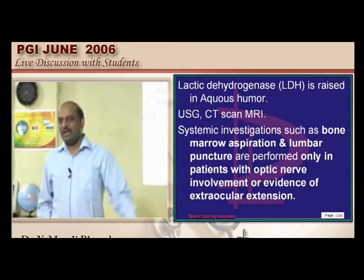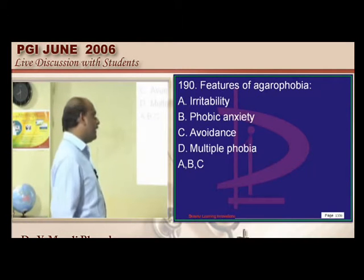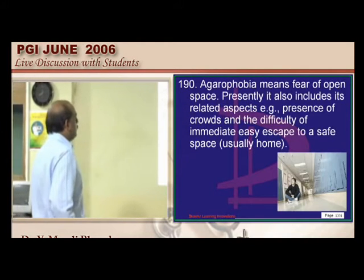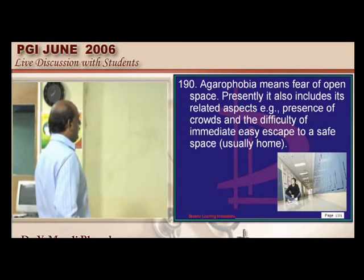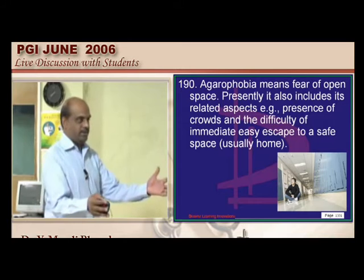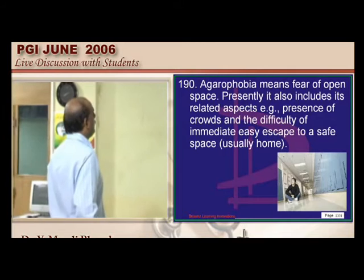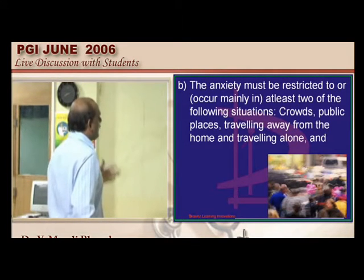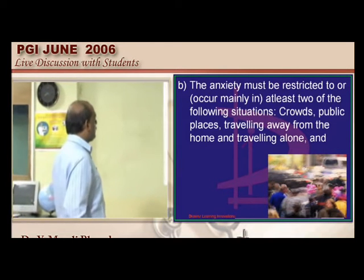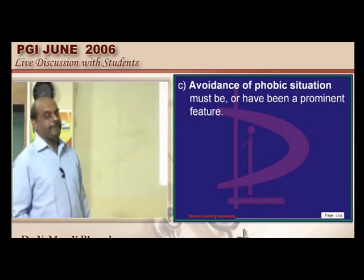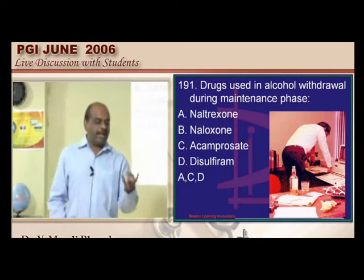Agoraphobia: phobic anxiety is present, avoidance is present, irritability is present, and there is great worry about crowds and heights. Patients feel very insecure in crowded places, public places, and when traveling away from home or traveling alone. They are very worried and avoid those phobic situations.